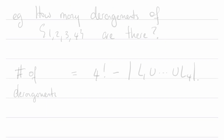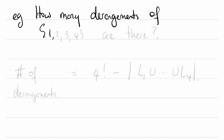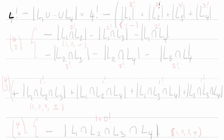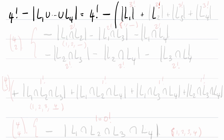Let's do a specific example. How many derangements of the set {1, 2, 3, 4} are there? Here, n is equal to 4. So the number of derangements is going to be 4 factorial minus the cardinality of L_1 union up to L_4. By the principle of inclusion-exclusion, that is 4 factorial minus the cardinalities of L_1, L_2, L_3, L_4.